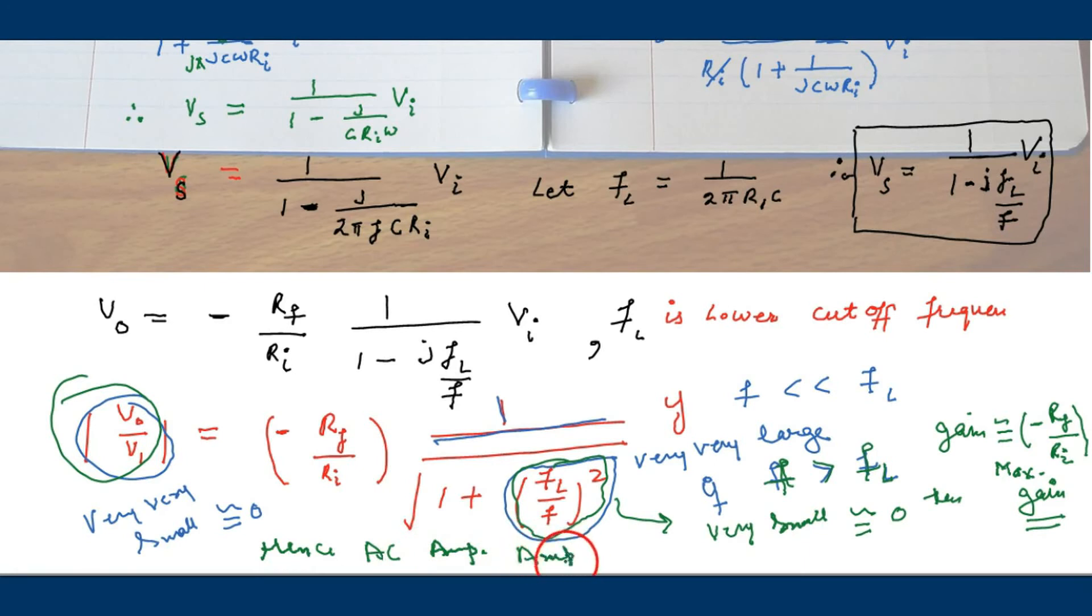So hence AC amplifier amplifies the AC signals above the frequency which is greater than the lower cutoff frequency.